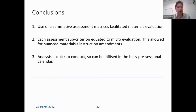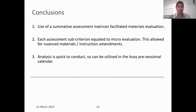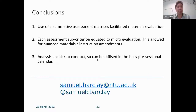So we're using summative assessment matrices to conduct materials evaluation — each sub-criterion equated to a micro evaluation, associated with certain activities in the materials. Based on this data we go back and tweak those activities, then test in the next iteration whether the manipulations had impact. The really good news is that because it was all done electronically via MS Forms, this analysis was very quick — just calculate descriptive statistics and look for outliers. I think you could do it in a really busy pre-sessional calendar.